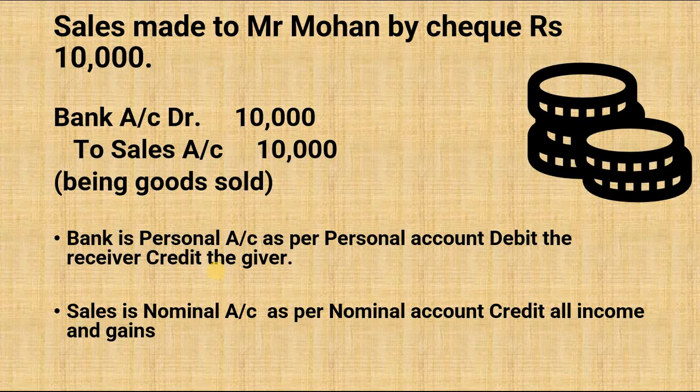Why do we do so? Because bank is a personal account, and as per the golden rule of personal account: debit the receiver and credit the giver. Here bank is the receiver, so we debit it. On the other hand, sales is a nominal account, and as per the golden rule of nominal account, we credit all income and gains. So sales is income here, so we credit it. In this way, our entry of receiving the check is made.